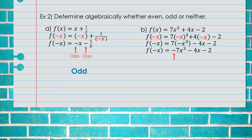Looking at the first sign, it is the opposite of the original. The second sign is also the opposite. But the third sign is the same as the original. Looking at all the signs together — are they all exactly the same? No. Are they all the opposite? No. Which means this is neither.